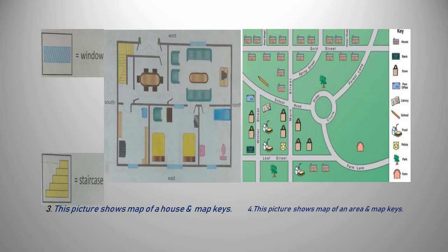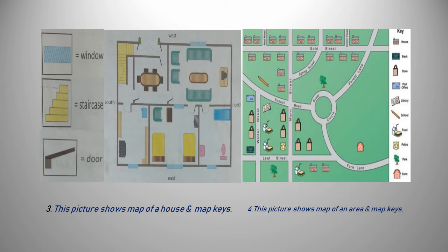This picture shows a map of a house and map keys. Is tasveer se hume pata chalta hai ke yeh ghar ka nakshah ya map hai, jis ko read karne ke liye teen keys bhi di gai hain. Inki madad se hum yeh jaan sakti hain ke is ghar mein kitne darwaze, seerhiyaan, aur khirkiyaan hain, aur kaunsi cheez kis direction ya location mein rakhi hai. Three keys are given to read this map. These keys will help us find the number of windows, staircases, and doors. By following these keys, we can find the exact picture in the map and know the direction of the rooms and their objects.